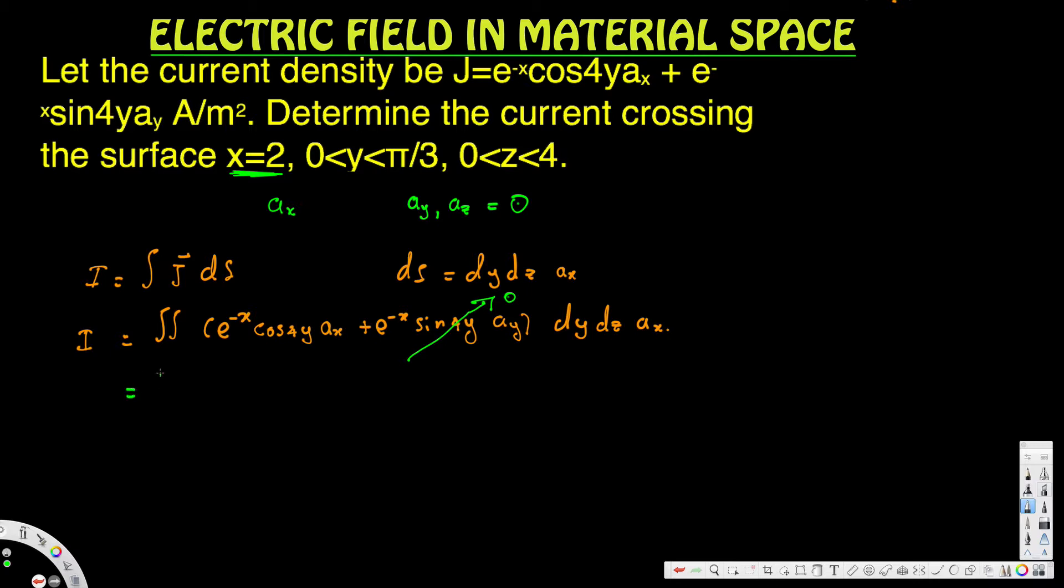We're only left with this part: the double integral e to the negative x cos 4y ax. Let's avoid ax for now—just e to the negative x cos 4y dy dz.